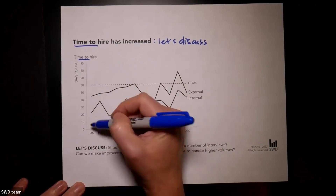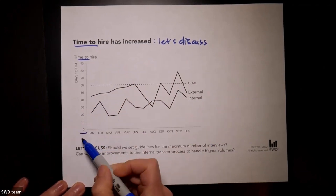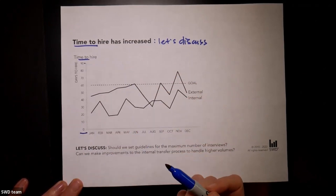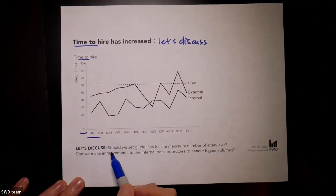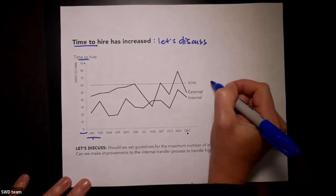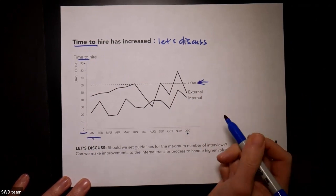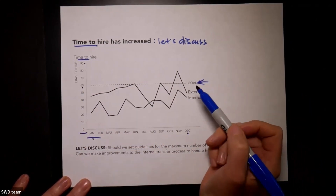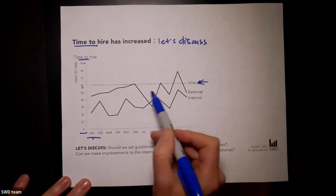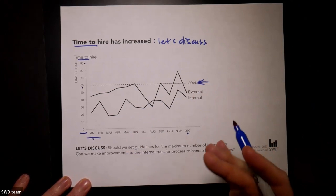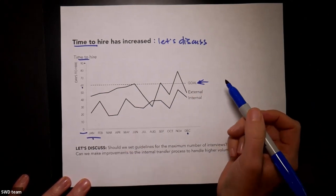We measure that in days, and that's what's shown on our y-axis: zero days down at the bottom, up to 90 days to hire at the top. The x-axis is months over time of the past calendar year, starting in January and going through December. Let's pay attention first to this goal line: 60 days to hire is our goal, which means we want to see data generally falling below that, so we're taking less than 60 days to hire.